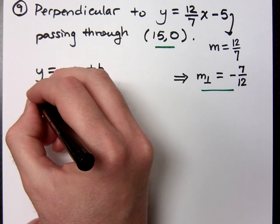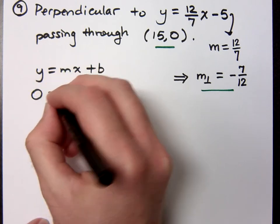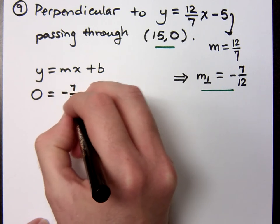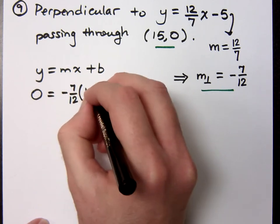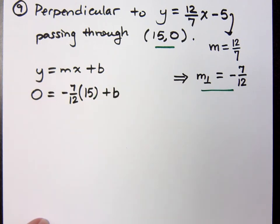So y is what? Zero. My slope is the slope that we're using here is negative 7 over 12. My x value is 15 plus b. Are you with me on that?